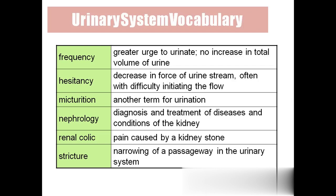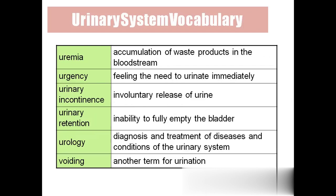Stricture means a narrowing of the urinary passage. Uremia means accumulation of waste products in the blood ('emia' means related to the blood). Urgency means the feeling to urinate immediately. Urinary incontinence means loss of control over the bladder — the patient cannot control urination — commonly seen in elderly people and post-pregnancy women.